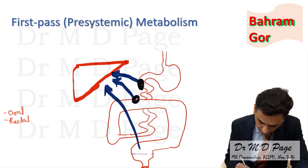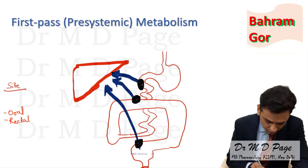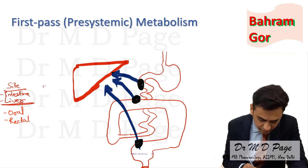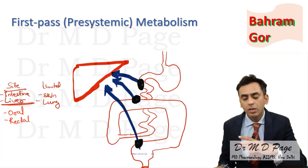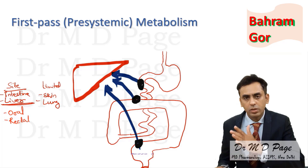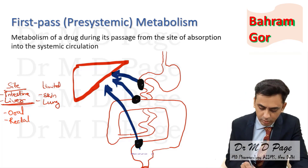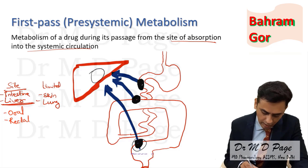Before going to the liver, the drug also gets metabolized in the intestinal wall. So the sites of first-pass metabolism are the intestine as well as the liver. Limited metabolism also occurs in the skin and lung. First-pass metabolism is the drug getting metabolized during the course of its absorption from the given site to systemic circulation — that is, metabolism of the drug during its passage from the site of absorption into systemic circulation.